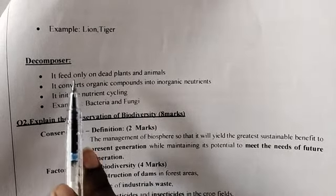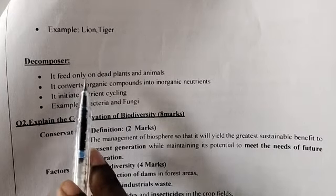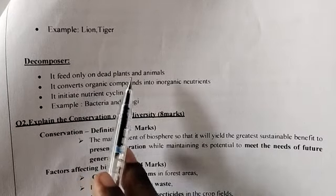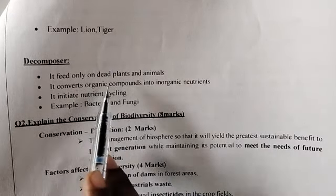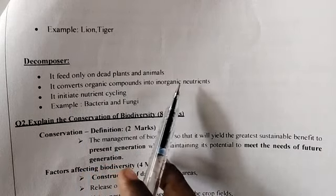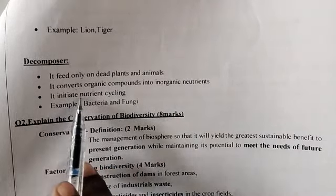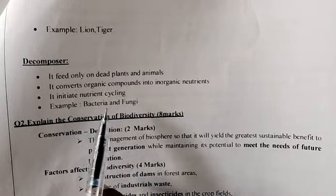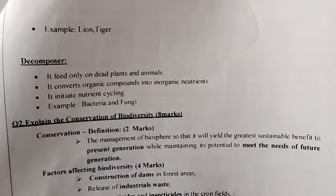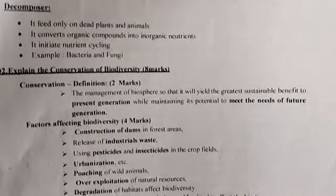Then we have decomposers. Decomposers feed only on dead plants and animals. They convert organic compounds into inorganic nutrients and initiate nutrient cycling. Examples: bacteria and fungi. These are the topics for the ecosystem structure.